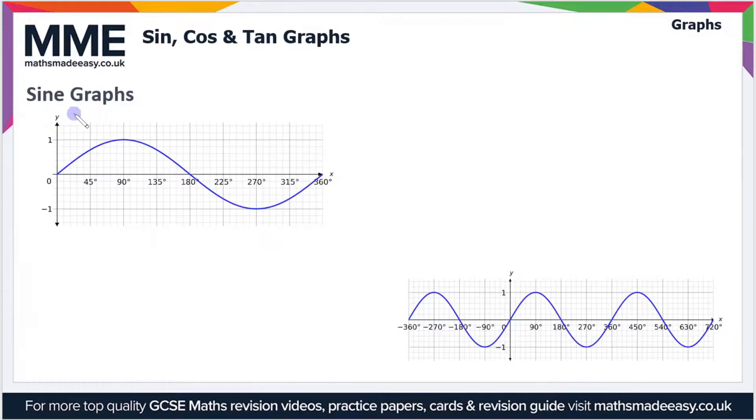We'll start by looking at the sine graph. Let's look at the axes. On the y-axis you can see we've got values of 1, 0, and minus 1. And on the x-axis we've got values of 0 through to 360 degrees. So these are in terms of angles.